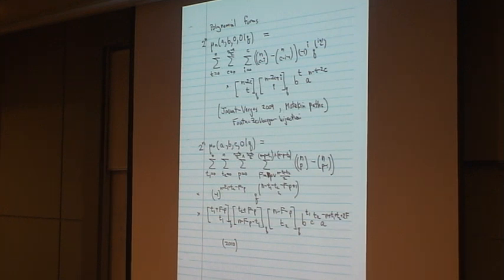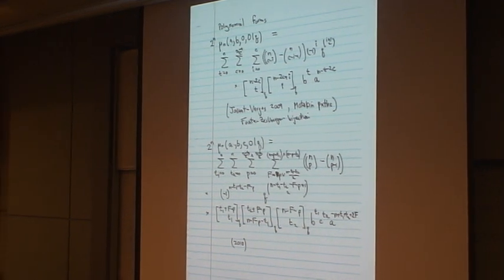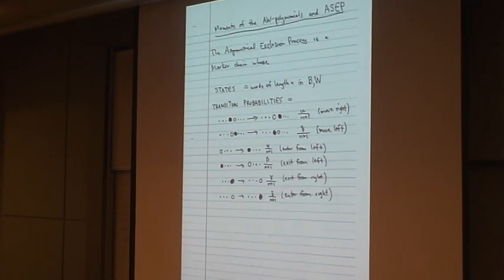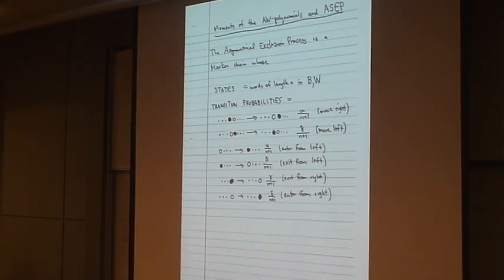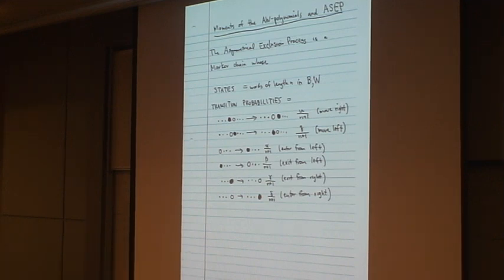Okay, so that's one explanation, where this identity came from. But these moments themselves are interesting for another reason. It's going to be the asymmetric exclusion process. This is a Markov...